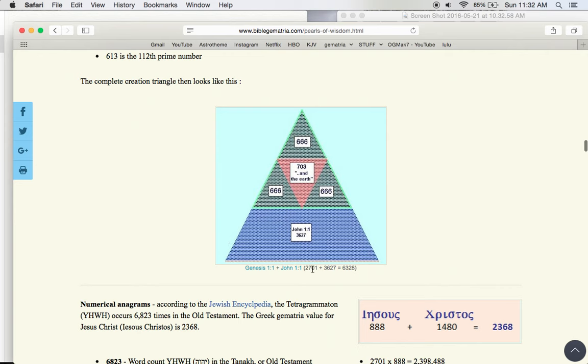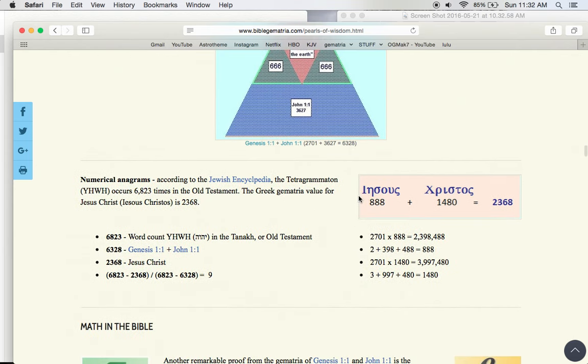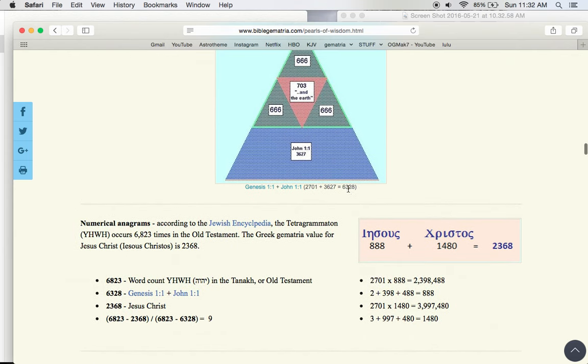So if you add 2701 plus 3627, it does become a perfect triangular number, which is 6328, which is an anagram for Jesus Christ. And also 6823 is the word count of Yahweh, or Adonai, in the Old Testament.